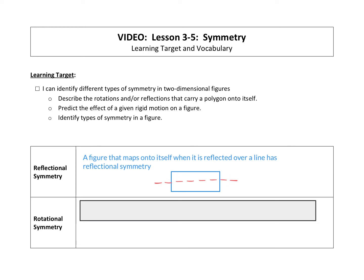So all of this would map onto itself down here. It has reflectional symmetry. Also, if I draw a symmetry line right there, this side would reflect onto itself over on this side. So that's called reflectional symmetry.